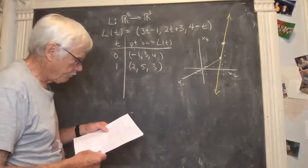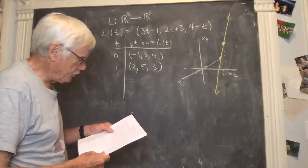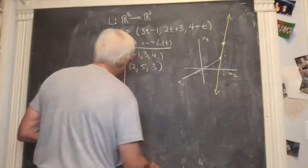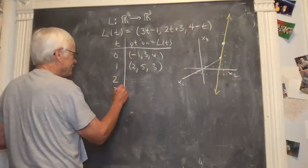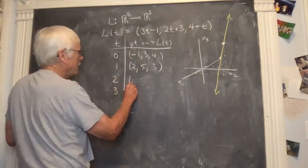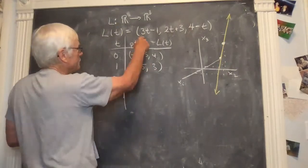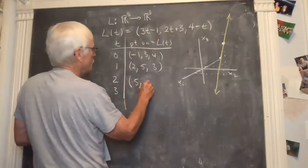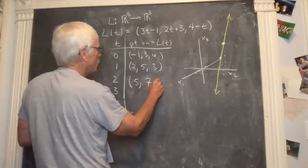All right. Make a list of three or four points on the graph. Well, this was good. We started out well. So maybe we plug in t equal two to get another one. Six minus one is five, four and three is seven, four minus two is two.